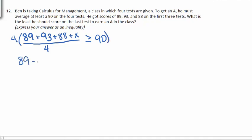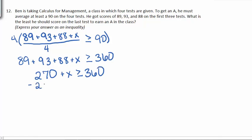The first step to this is to multiply both sides by 4. So on the left, we're left with 89 plus 93 plus 88 plus x. On the right, 4 times 90 is 360. 89 plus 93 plus 88 is 270, plus x is greater than or equal to 360. We'll subtract 270 from both sides, and that gives us that x has to be greater than or equal to 90. So he needs a 90 or higher on the last test.